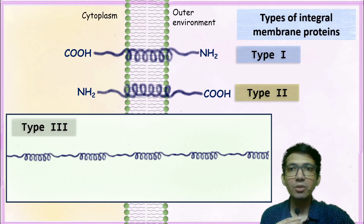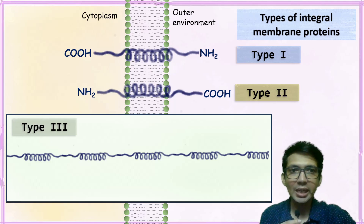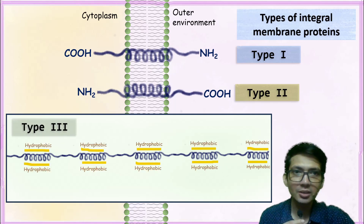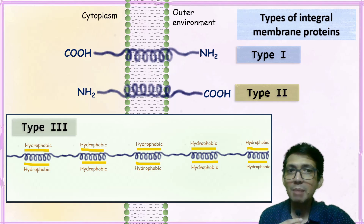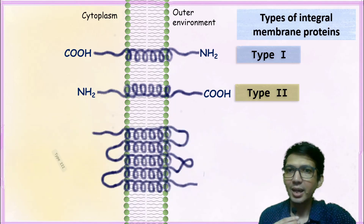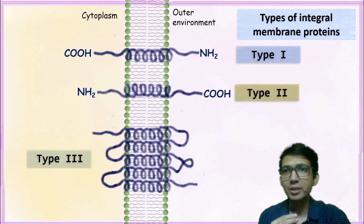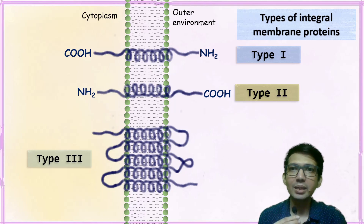The type 3 integral membrane protein is a large protein with multiple secondary structures. All these secondary structures have a hydrophobic region which allows them to be embedded inside the lipid bilayer. Remember, this is a single protein with multiple secondary structures. The N-terminal and C-terminal can be on either side — in the cytoplasm or in the outer environment.